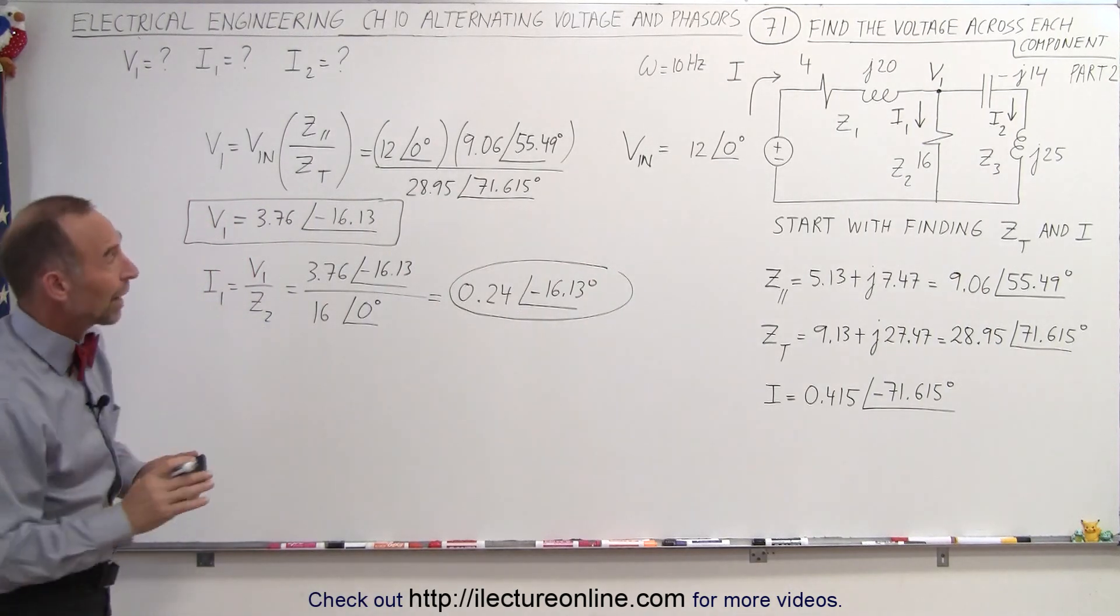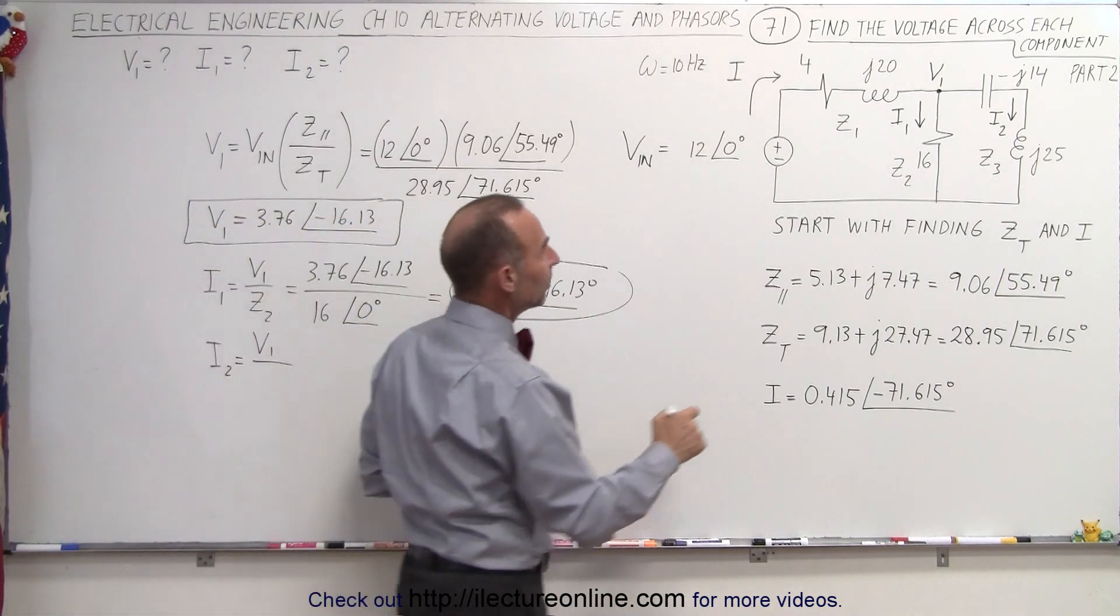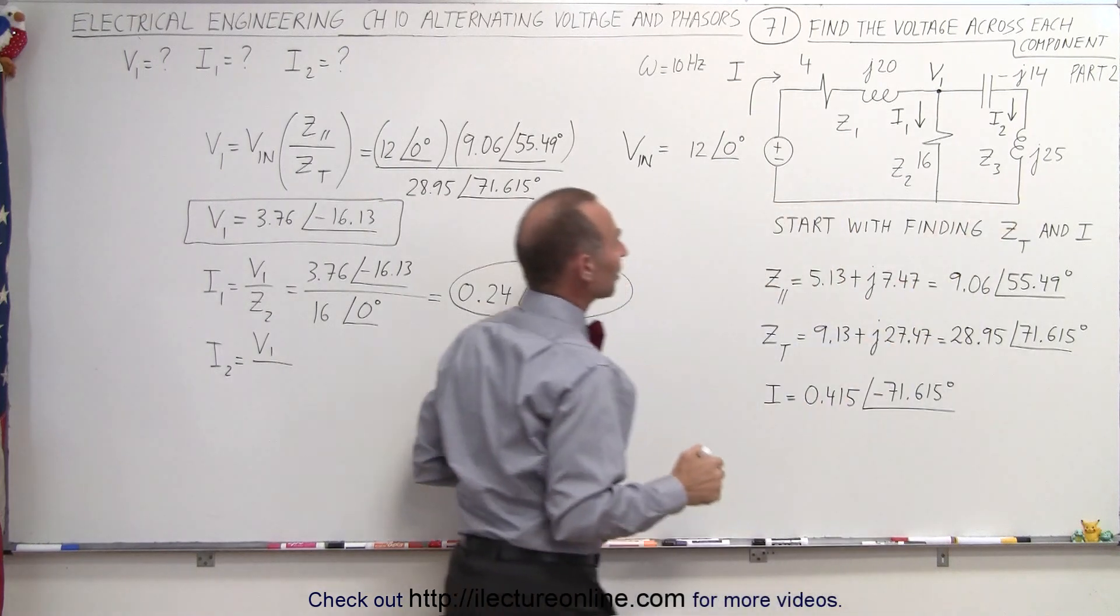Now to find current in branch 2, we take V1 again, but now we divide it by the impedance in the other branch. We'll call that Z3.